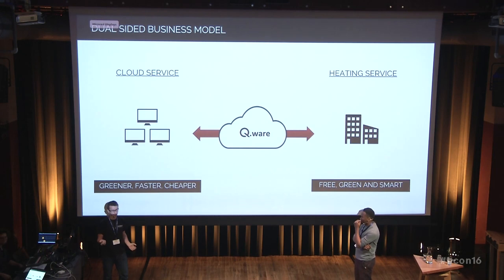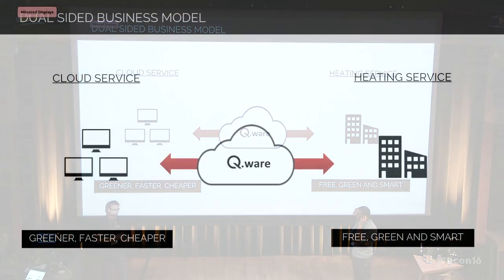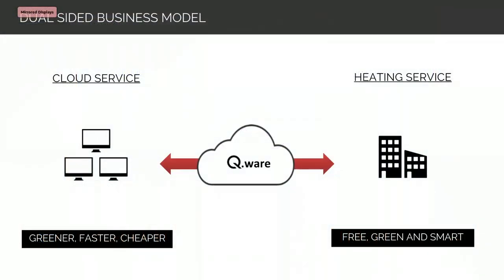We have a dual-sided business model. On one side, we are a cloud platform — we sell computation time to individuals and companies. On the other side, we produce the heater and put it in people's houses, and we pay the electricity bill for them. So they are heated for free with other people's rendering.